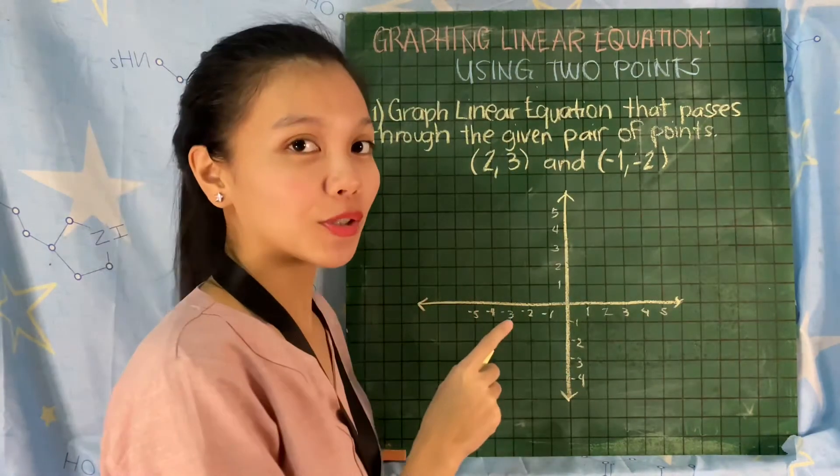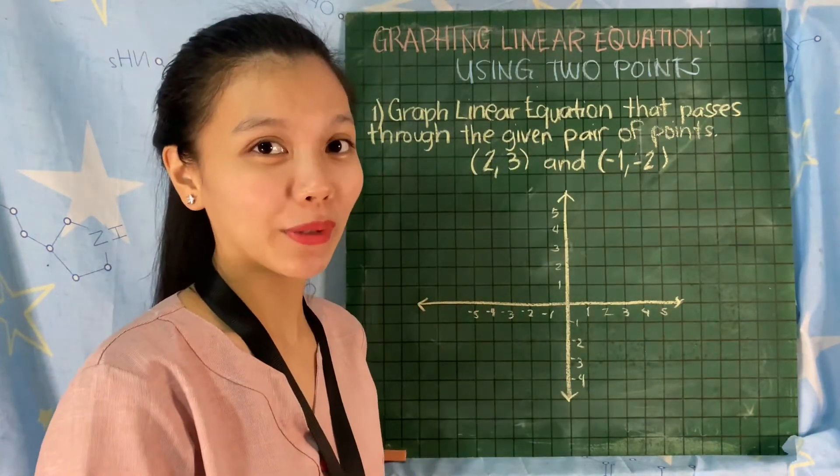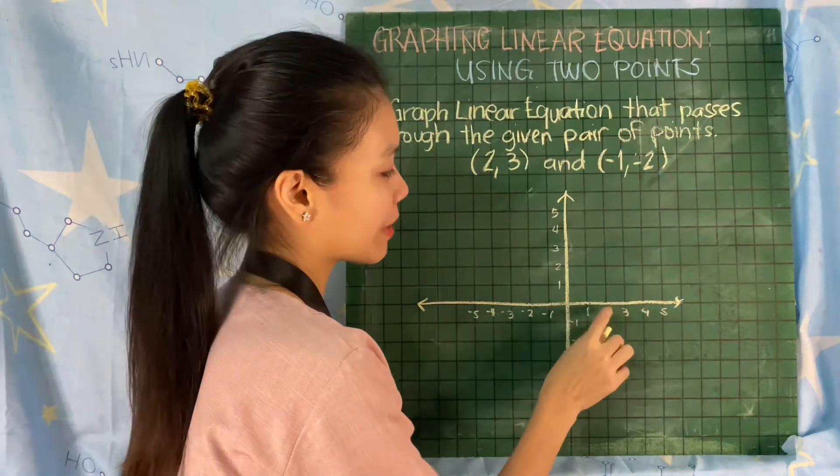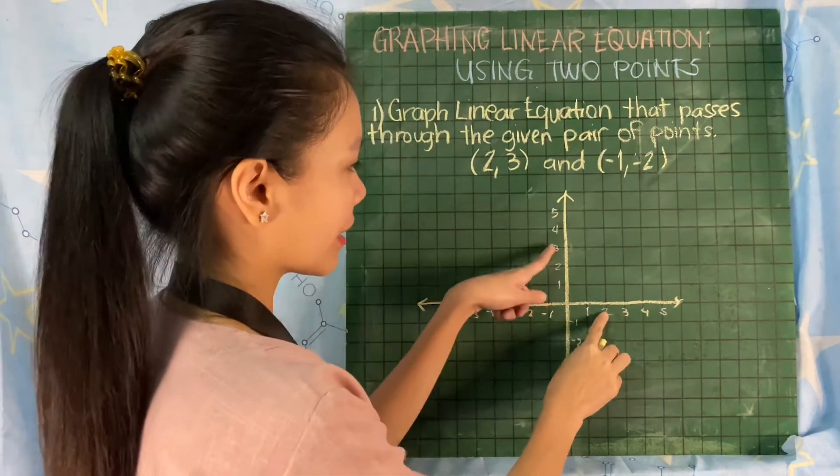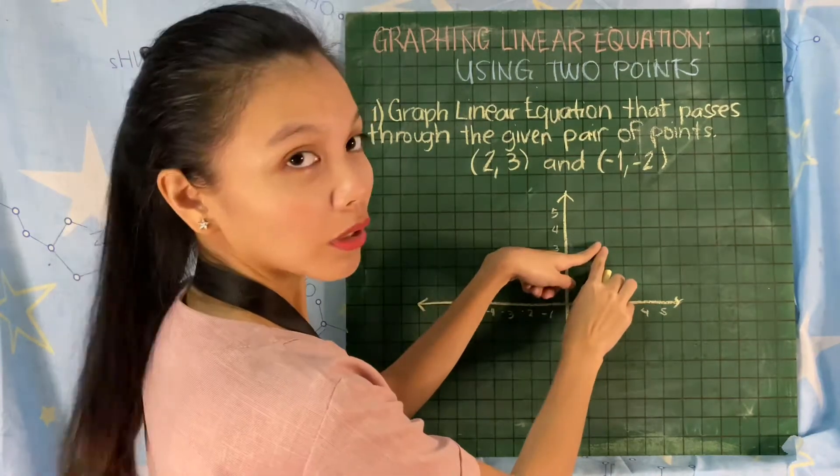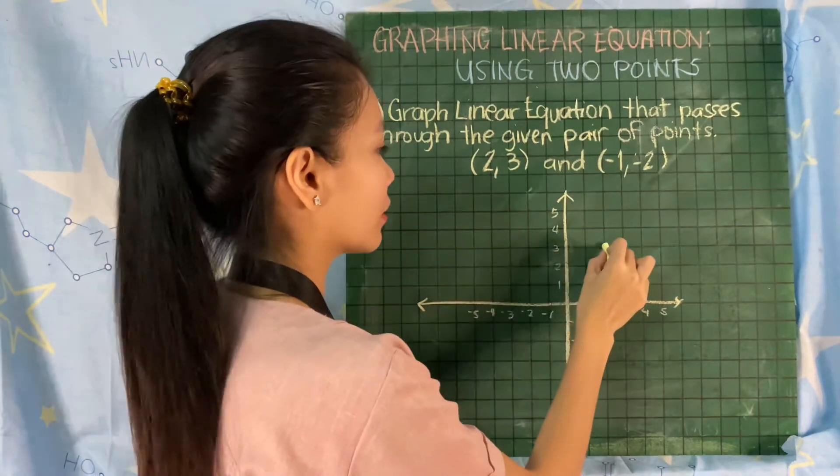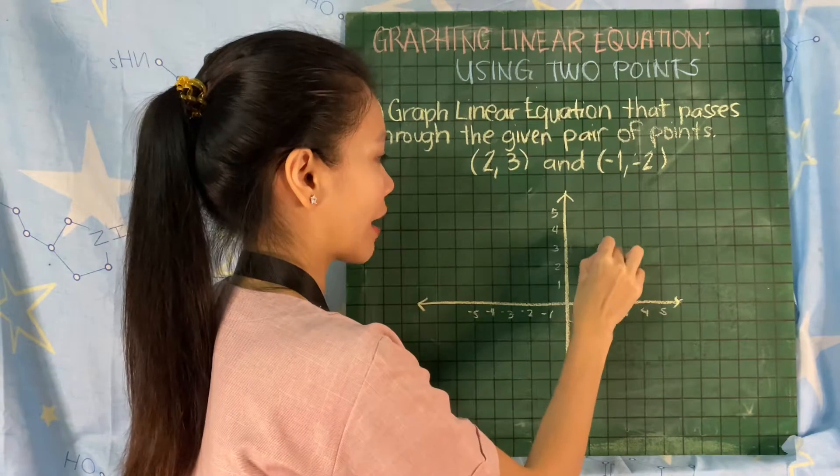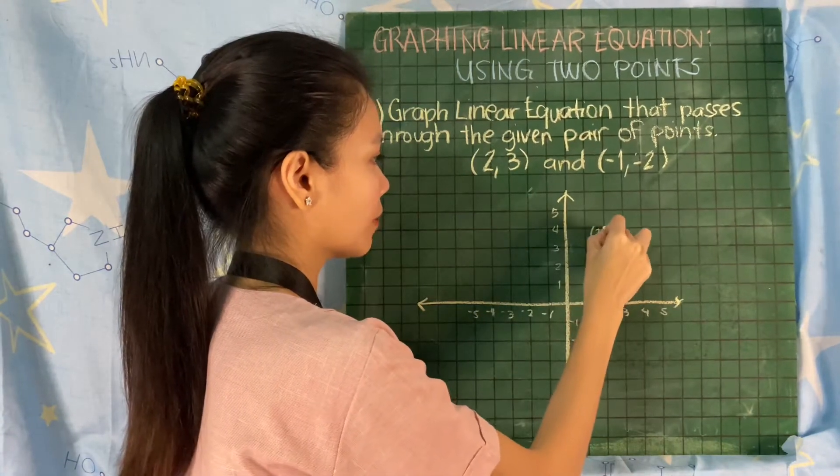Find 2 on the x-axis, then find 3 on the y-axis. We have here positive 2 and this is positive 3. We are going to connect them or meet them. This is their point: positive 2, positive 3.